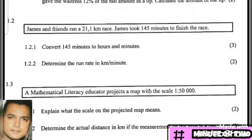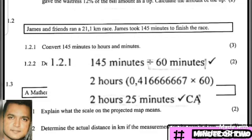Question 1.2.1: convert 145 minutes to hours and minutes. Whenever we need to convert minutes into hours and minutes, we divide by 60 because there are 60 minutes in one hour. Taking 145 divided by 60, we arrive at 2.4166667 on our calculator. The most common mistake learners make is taking that decimal and saying it is 2 hours and 42 minutes — that is incorrect.